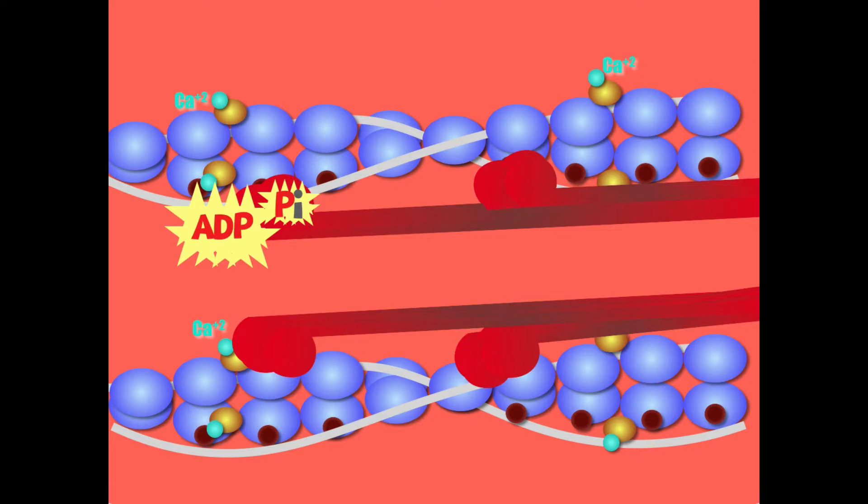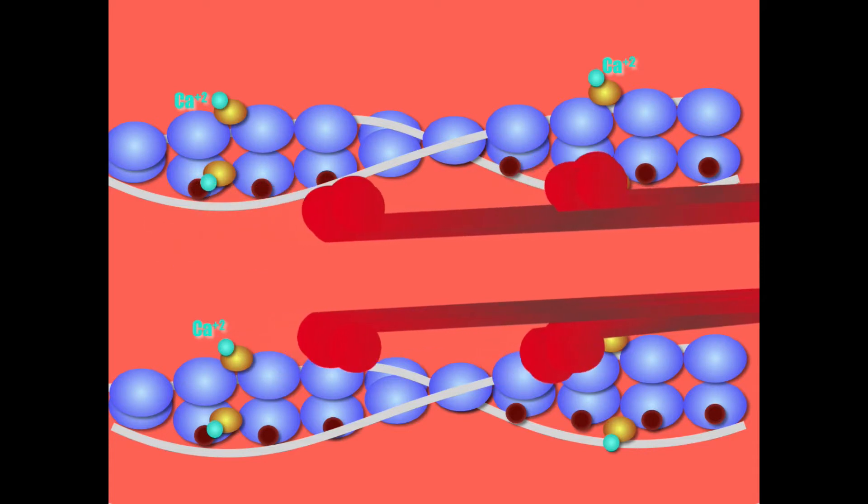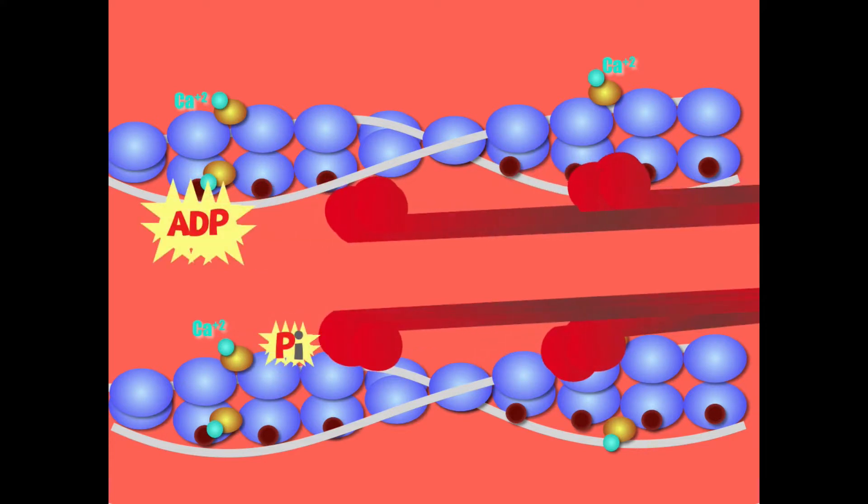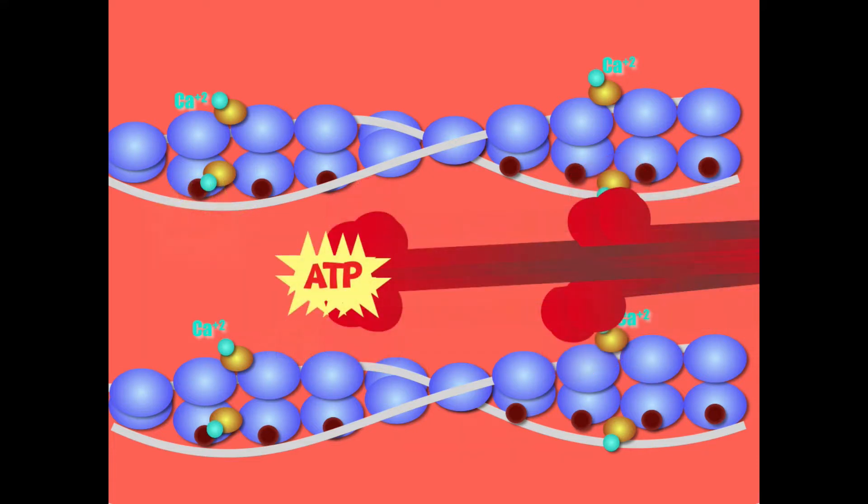The power stroke is where the energy is actually being used up. ADP and phosphate are actually going to break up and split up. That's the power stroke. After the power stroke, the myosin needs to detach and get ready again.